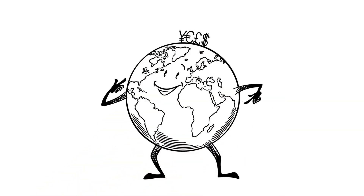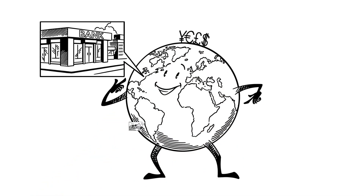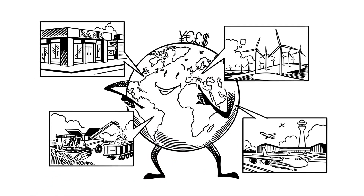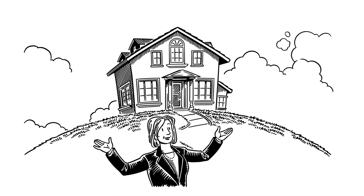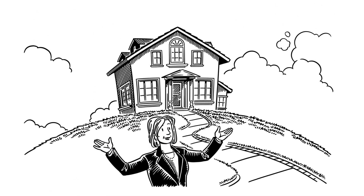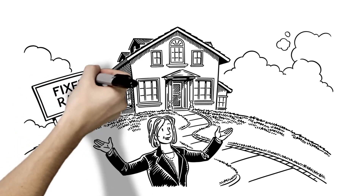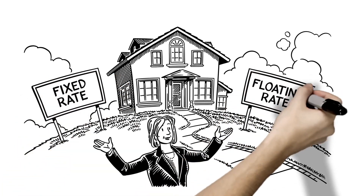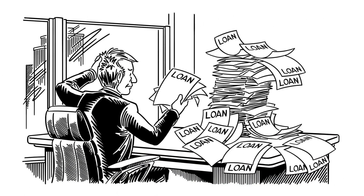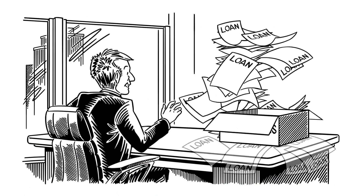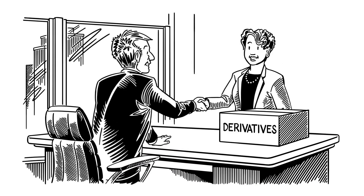Thousands of companies around the world use derivatives to reduce risks for their businesses and increase certainty for their customers. Mortgage providers, for example, use derivatives to offer home buyers a choice of fixed or floating-rate mortgages. Banks also use derivatives to manage the risk from their loan books, enabling them to lend more.